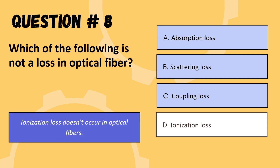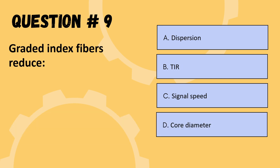Next question: graded index fiber reduces — options are dispersion, TIR, signal speed, or core diameter. The correct option is A: dispersion.